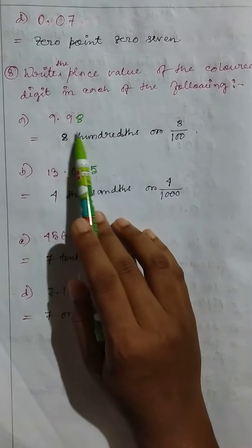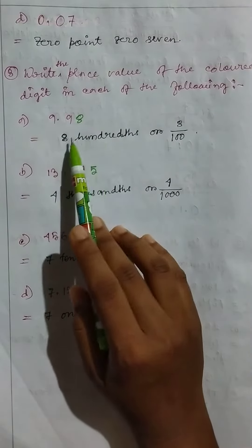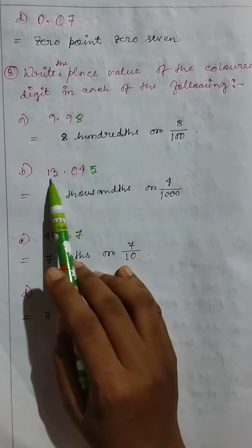Nine point nine eight, so eight hundredths or eight by hundred. Thirteen point zero four five, so five thousandths or five by one thousand.